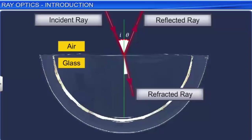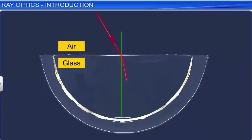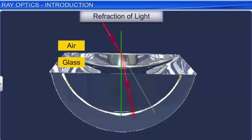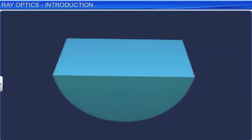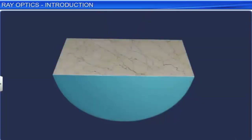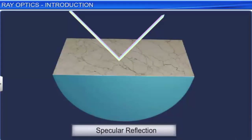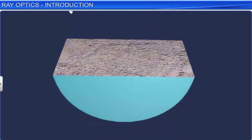When light rays enter the second medium, they deviate from their usual path. This phenomenon is known as refraction of light. If the second medium is opaque, most of the light reflects back to the same medium. When the surface is smooth, reflection takes place at a definite angle and is known as specular reflection. If the surface is rough, reflection is called diffuse reflection.